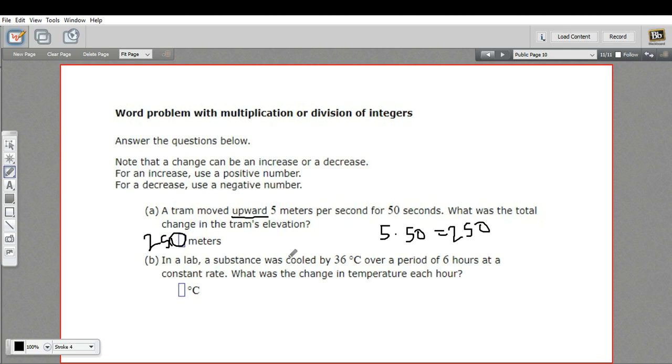Let's look at B. In a lab, a substance was cooled by 36 degrees Celsius over a period of six hours at a constant rate. What was the change in temperature each hour?